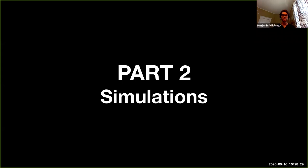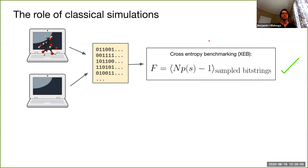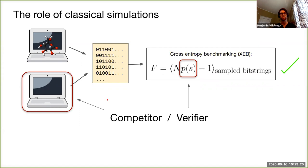That concludes the experiment overview. Now for part two: simulation. Classical simulation plays two roles — competing against the quantum computer and verifying that it's doing the right thing. Both competitors — the quantum computer and the classical computer — try to perform the same task: sampling bit strings from the random circuit, which are then verified by cross-entropy benchmarking.